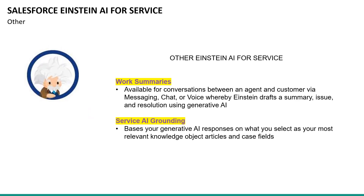In addition to the features already mentioned, there are two more. The work summaries Einstein feature can use messaging, chat, or voice to draft a summary of the conversation between the agent and the customer using generative AI. In addition, the service AI grounding Einstein AI for Service feature bases your generative AI responses on what you select as your most relevant knowledge object articles and case fields.